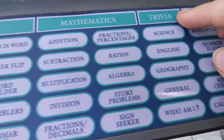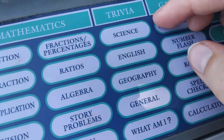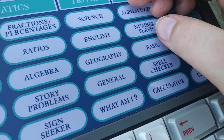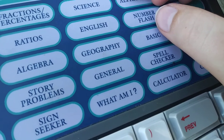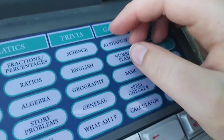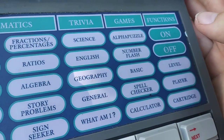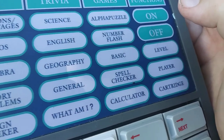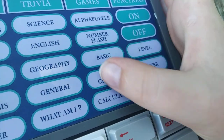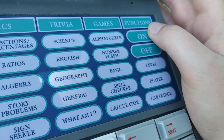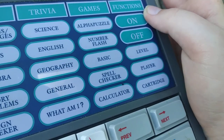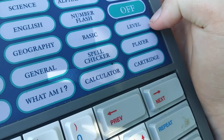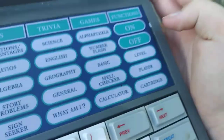Right here for trivia, we have science, English, geography, general, and 'what am I?' For games, we have alpha puzzle, number flash, basics, spell checker, calculator. For functions: on, off, level, player, and then cartridge.